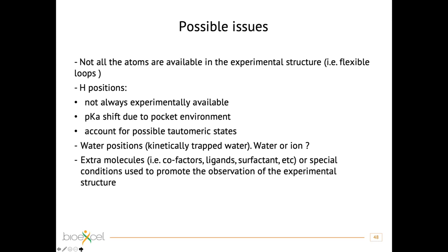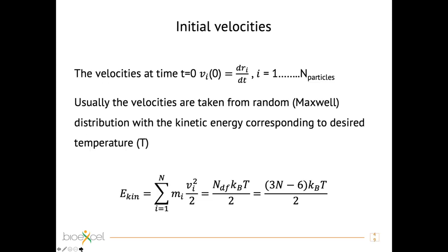Once we have our structure and are satisfied with it — meaning we have the positions of all atoms in a file — our system will also need a temperature. Starting from a structure file means starting at temperature equal to zero. Alternatively, we can assign random velocities such that their distribution reproduces the desired temperature, for example by drawing velocities from the Maxwell-Boltzmann distribution with the kinetic energy corresponding to the desired temperature.